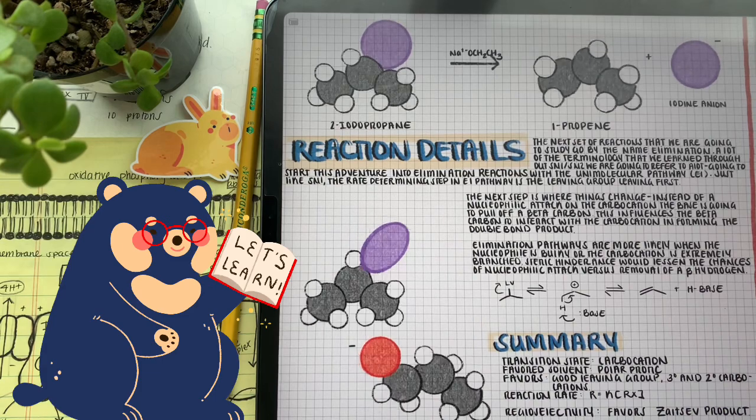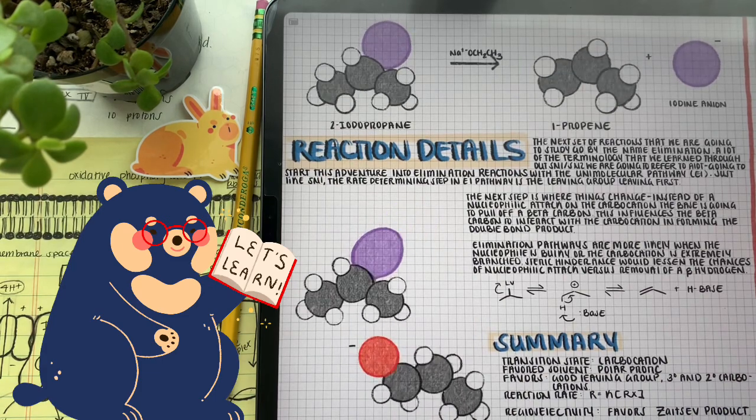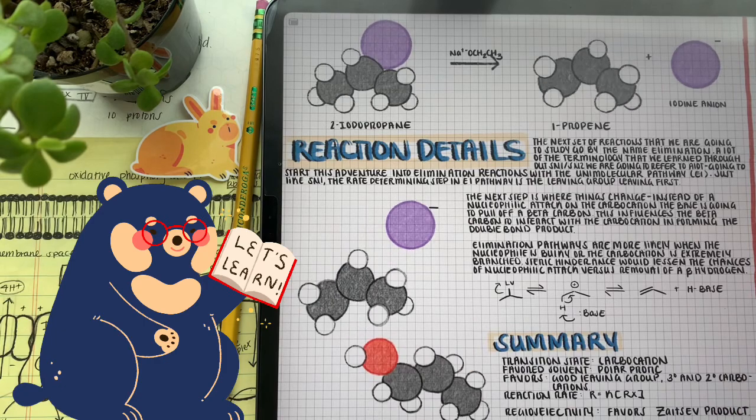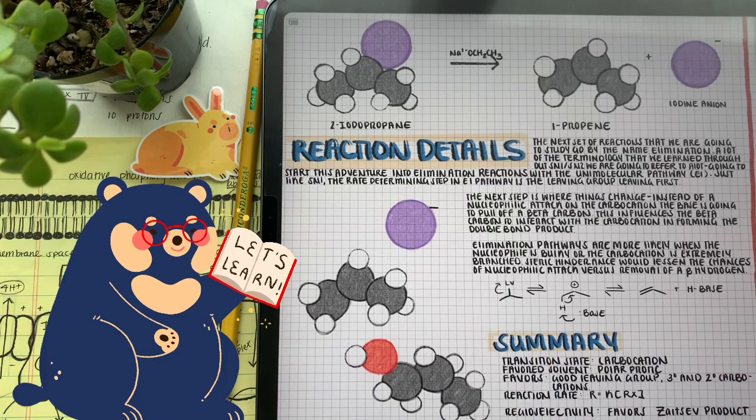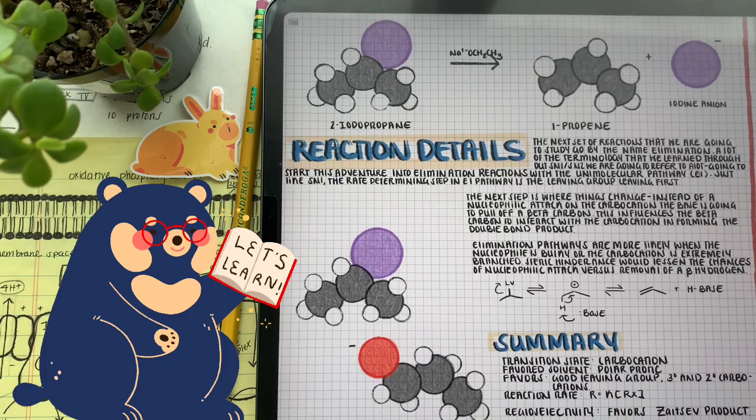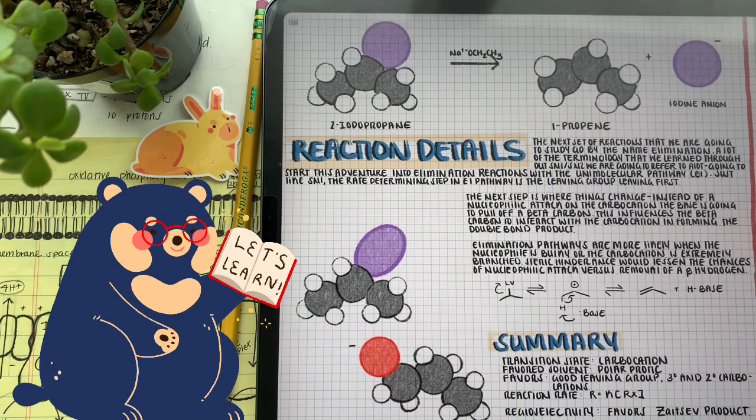But instead of attacking the electrophilic carbon, the base pulls a hydrogen off of a beta carbon, or a carbon right next to the carbocation carbon. This results the electrons of the beta carbon to be migrated to form a double bond between the two carbons.